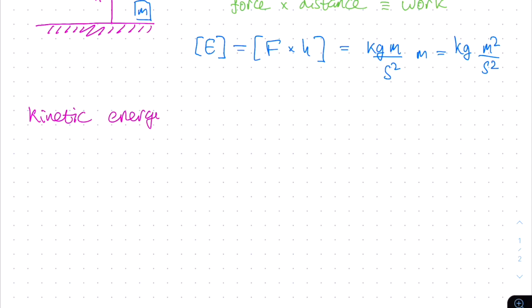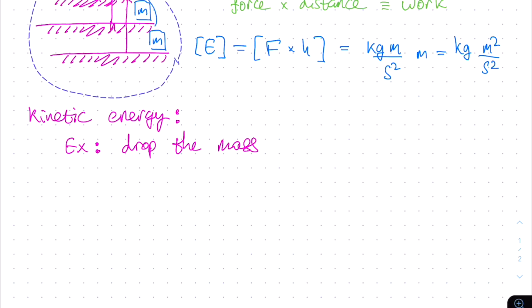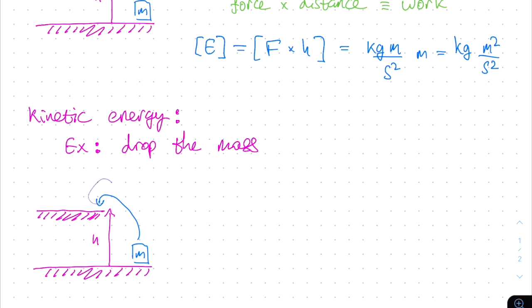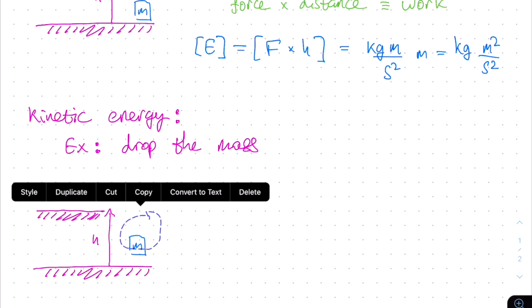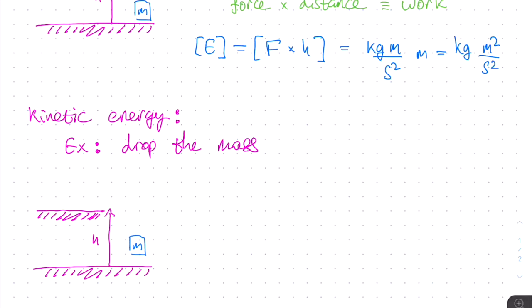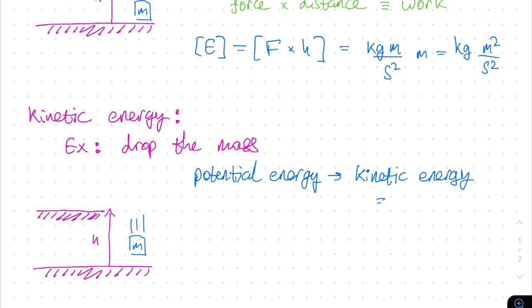For our second example, let's take a look at kinetic energy, or energy of motion. Suppose we take our mass and go ahead and drop it. When we lifted the mass up, we did work against the force of gravity. When we allow the mass to drop, the force of gravity does work on the mass, so it takes the potential energy of the mass and converts it into the motion of the mass. Because of energy conservation, all the potential energy of the mass ends up being kinetic energy. In other words, by dropping the mass, we are converting its potential energy into kinetic energy, or energy of motion.